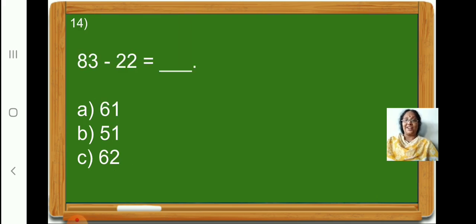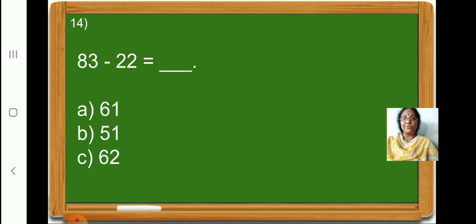Now, children, let us subtract 83 minus 22. First, we will subtract the numbers in the 1's place. 3 minus 2 is 1. Now, let us subtract the numbers in the 10's place. 8 minus 2 is 6. Therefore, 83 minus 22 is 61. Children, put a tick on option A, 61.